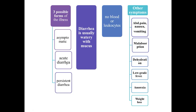Three possible forms of illness can occur: asymptomatic illness, acute diarrhea, or persistent diarrhea. Diarrhea is usually watery with mucus — there is no blood or leukocytes seen. Other accompanying symptoms include abdominal pain, nausea, vomiting, malabsorption, dehydration, low-grade fever, anorexia, and weight loss, as people generally avoid taking feeds during this time.